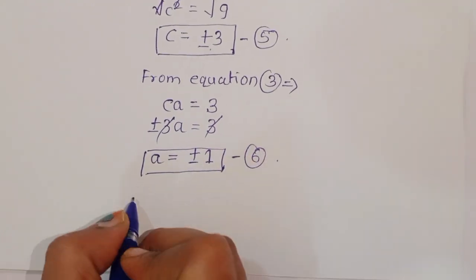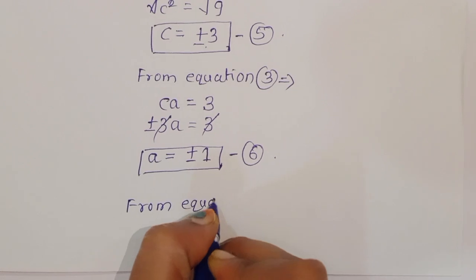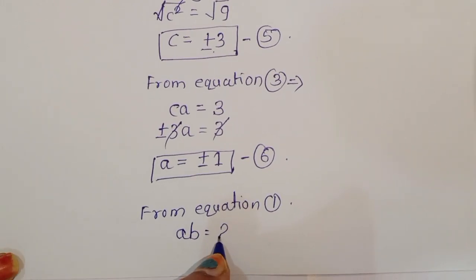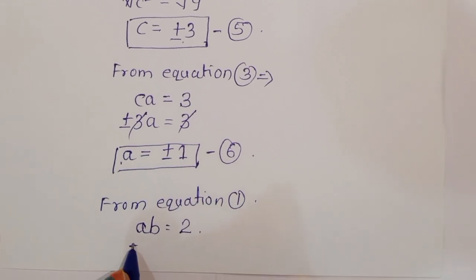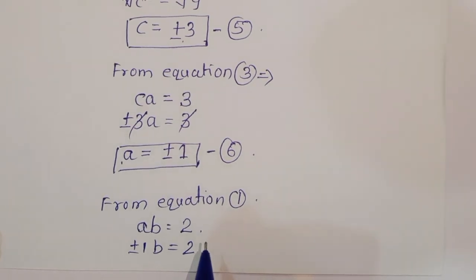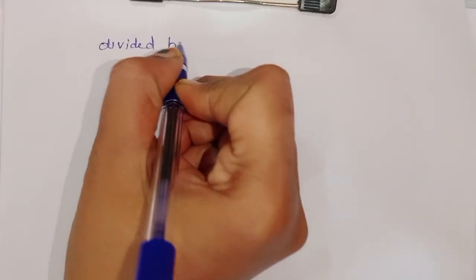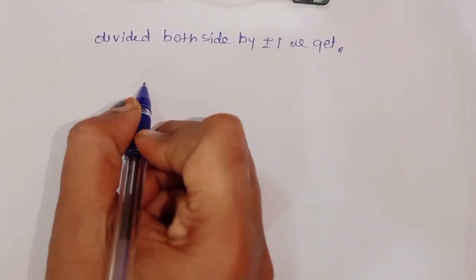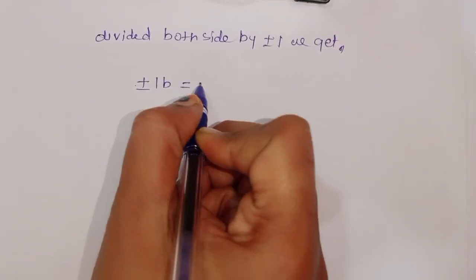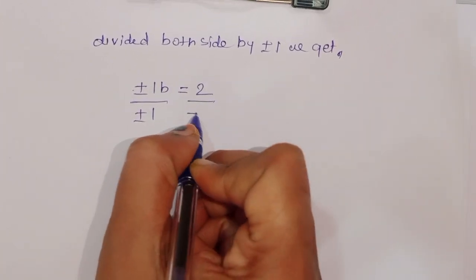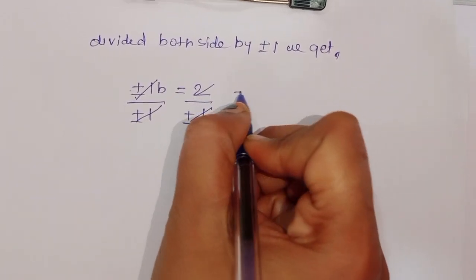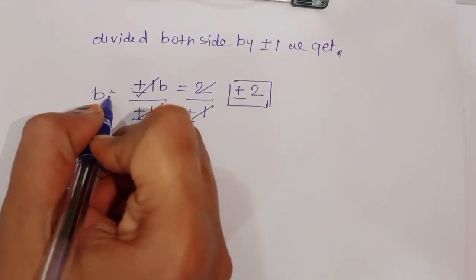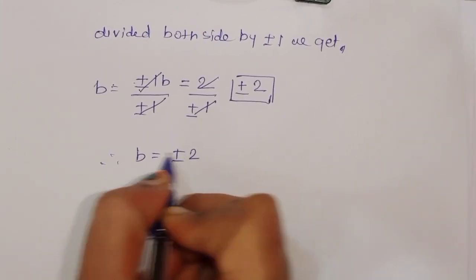From equation 1, AB is equal to 2. The value of A is plus or minus 1, so plus or minus 1 times B equals 2. Dividing both sides by plus or minus 1, B is equal to plus or minus 2. This is the value of B.